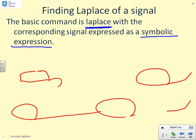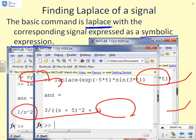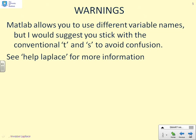A final Laplace example uses a slightly more complicated expression: e^(-5t)·sin(3t). The expression is written as `exp(-5*t)*sin(3*t)` and the result comes out as 3/((s+5)²+9), exactly as expected. Hopefully you can see what the `laplace` tool does: you enter the expression as a function of a symbolic variable, and `laplace` returns the equivalent Laplace transform. MATLAB allows different variable names, but it's recommended to stick with `t` and `s` to avoid confusion. For basic courses, this single slide covers as much as you will need.